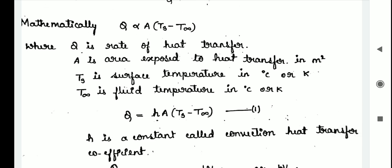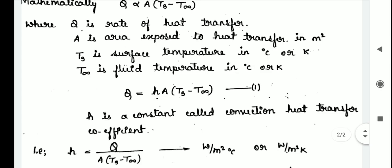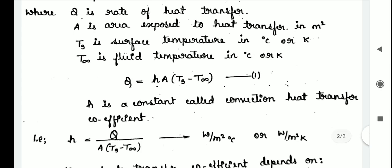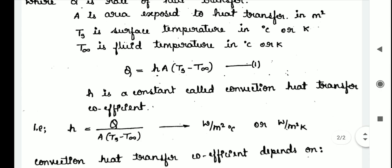The above equation we can write as Q equals h A times Ts minus T infinity. Put it as equation 1. Here h is a constant called the convection heat transfer coefficient.